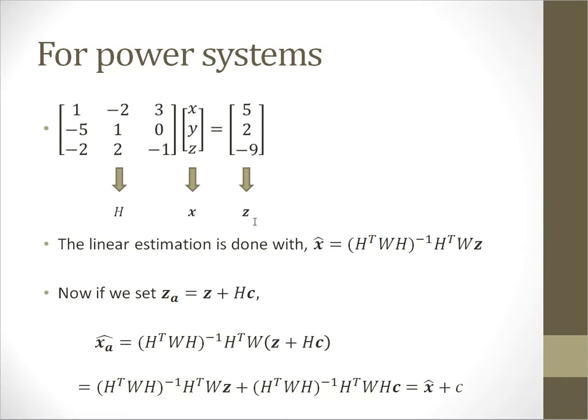The linear state estimation is done with this equation, which is very simple and straightforward. Now, if we replace this measurement with z plus Hc, we can calculate that the estimated value becomes the original estimated value added with some changes c.